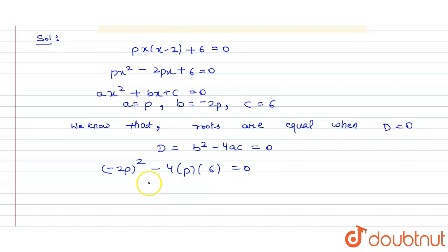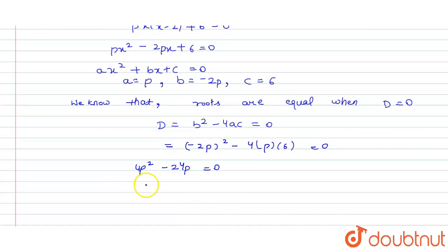Now, solving this, we will get 4P squared minus 24P equals 0. Taking 4 common out of this, we get 4P and inside we will get P minus 6.